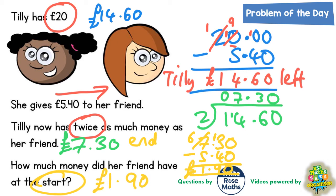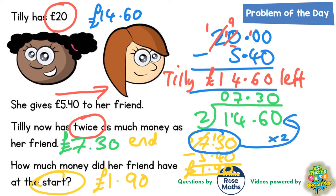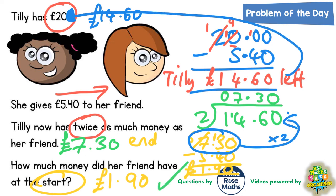Let's just double check the main points. If she started with £1.90 and you add the £5.40 given to her, that gets us back to £7.30. But Tilly has got twice as much as this, so doubling £7.30 gets you back to £14.60. That £14.60 is what Tilly's got left after giving away £5.40, and adding that £5.40 back on gives you her starting total of £20. So it all fits and makes sense — the final answer is £1.90; that's how much her friend had at the start.